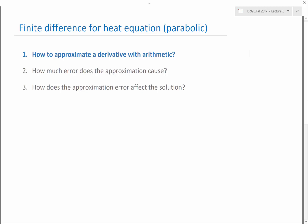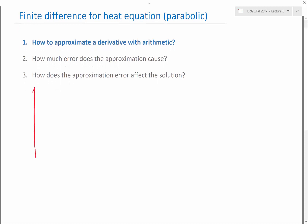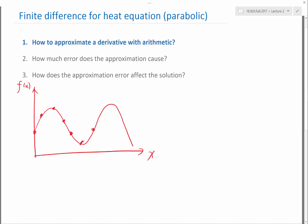So let's start from the first. In finite difference, how do we approximate a derivative given only the knowledge of the function at the grid points? I know the value of the function exactly, but only at these grid points. What can I do?